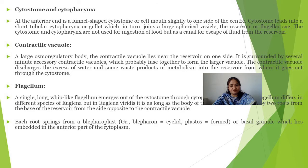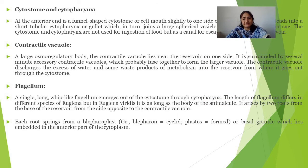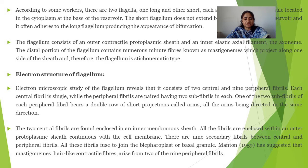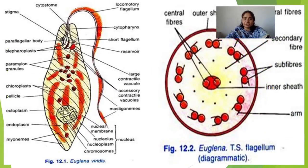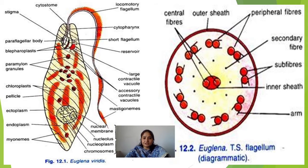A single long whip-like flagellum emerges out of the cytostome through the cytopharynx. The length of the flagellum differs in different species of Euglena, but in Euglena viridis it is as long as the body of the animalcule. The flagellum consists of an outer contractile protoplasmic sheath and an inner elastic axial filament. In electron microscopic structure, the flagellum shows a 9+2 arrangement of microtubules, which are related to locomotion.